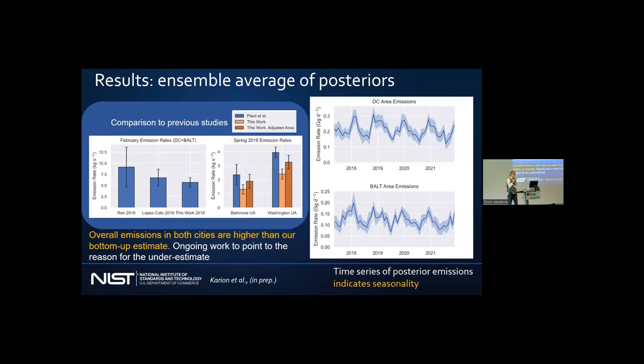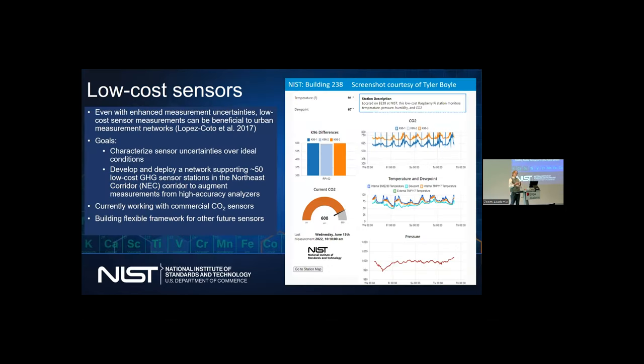She compared her results to previous studies, all flight data, and they correspond pretty well. But overall, her emissions in both cities are higher than her prior. There's ongoing work to point to the reasons for these underestimates. She's attributing this with future analysis to the natural gas sector. You can see that in the time series of her posterior emissions, which definitely indicates seasonality. If you looked at natural gas consumption, it trends pretty well.